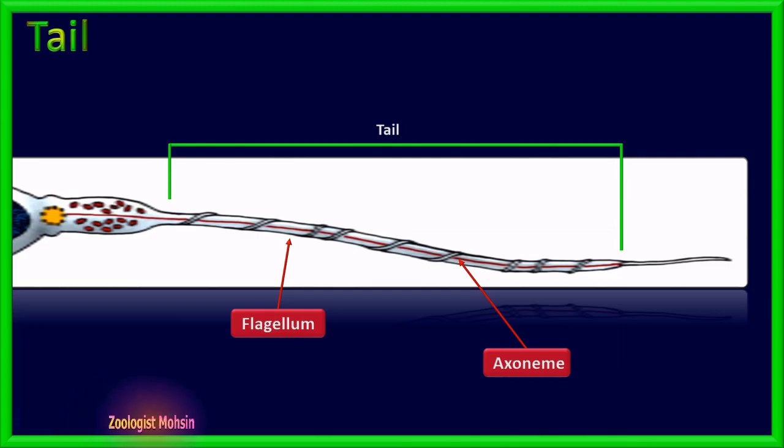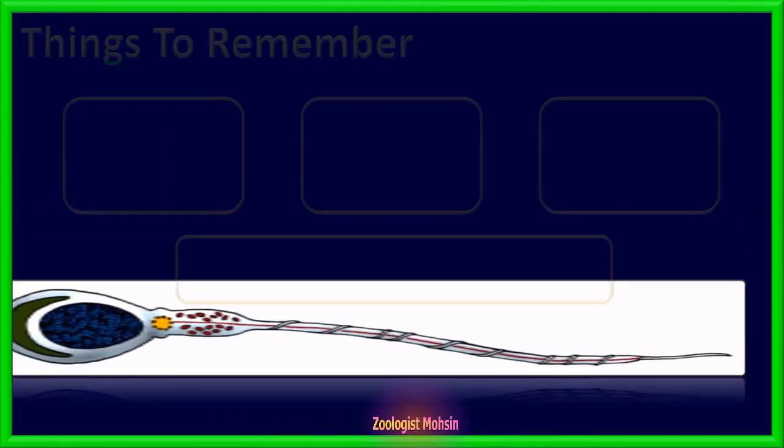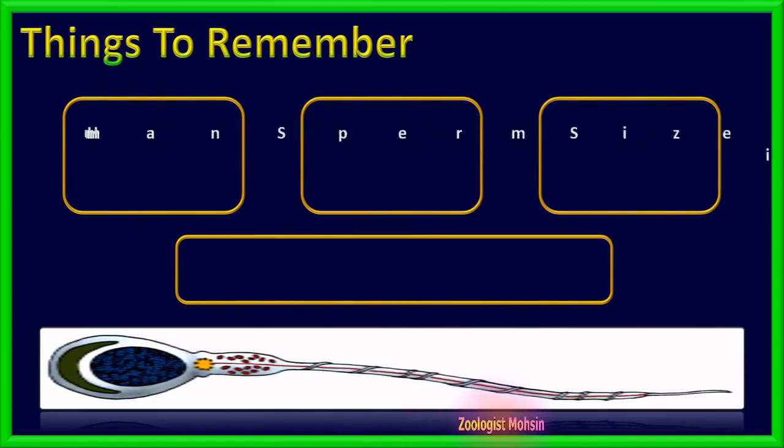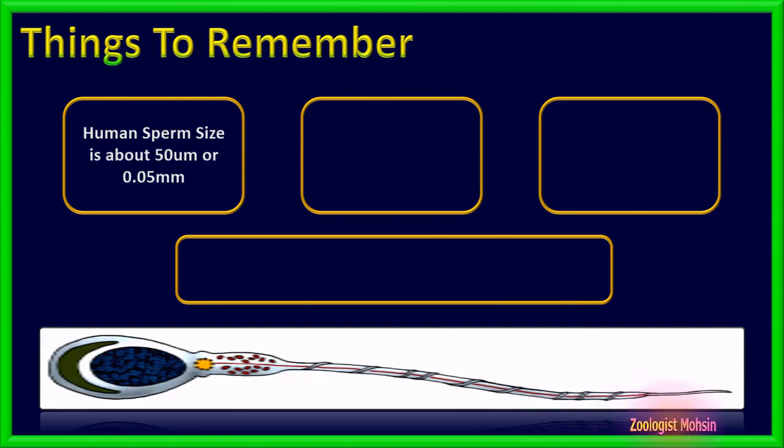Now let's explore some facts about sperms in humans. Human sperm size is about 50 micrometers or 0.05 millimeters. Human sperm speed is about 8 to 9 inches per hour or 4 millimeters per minute.